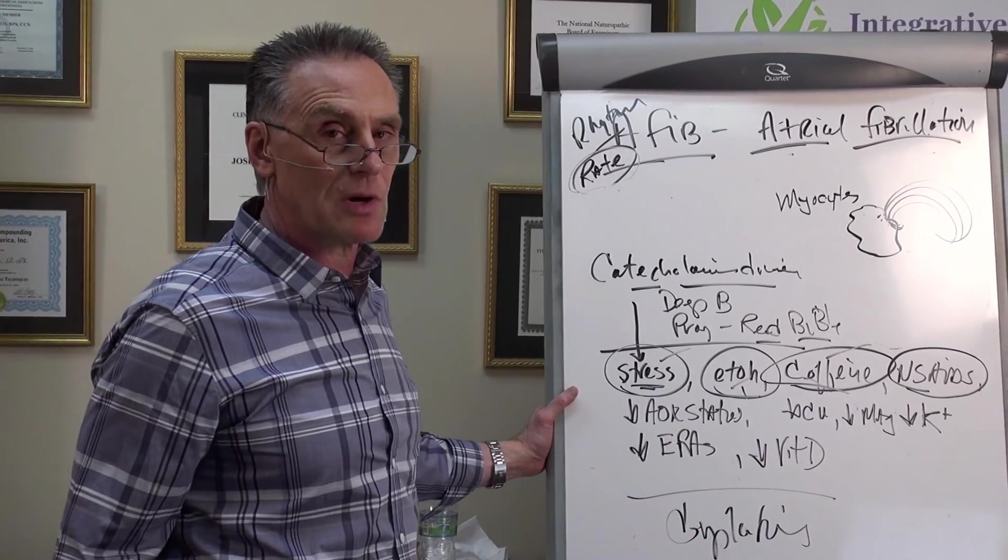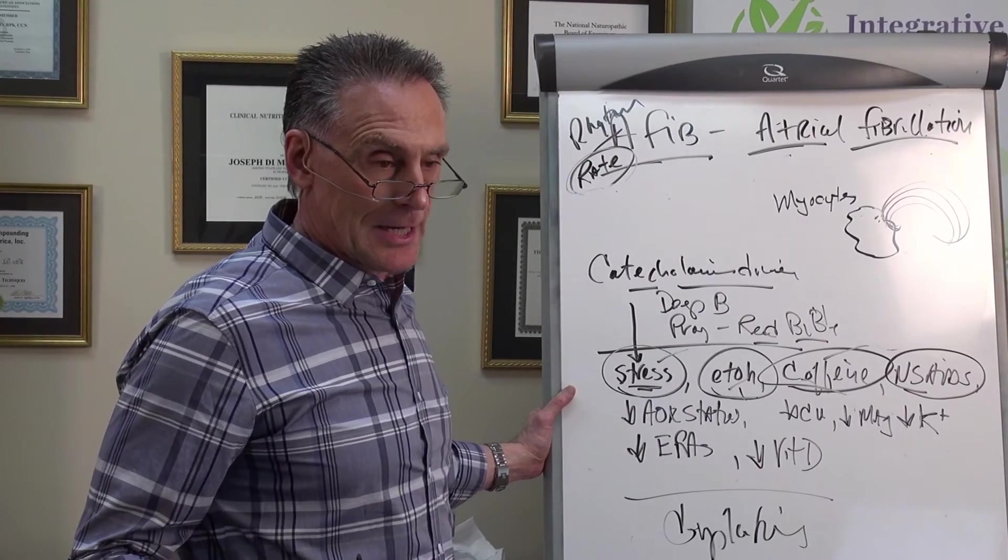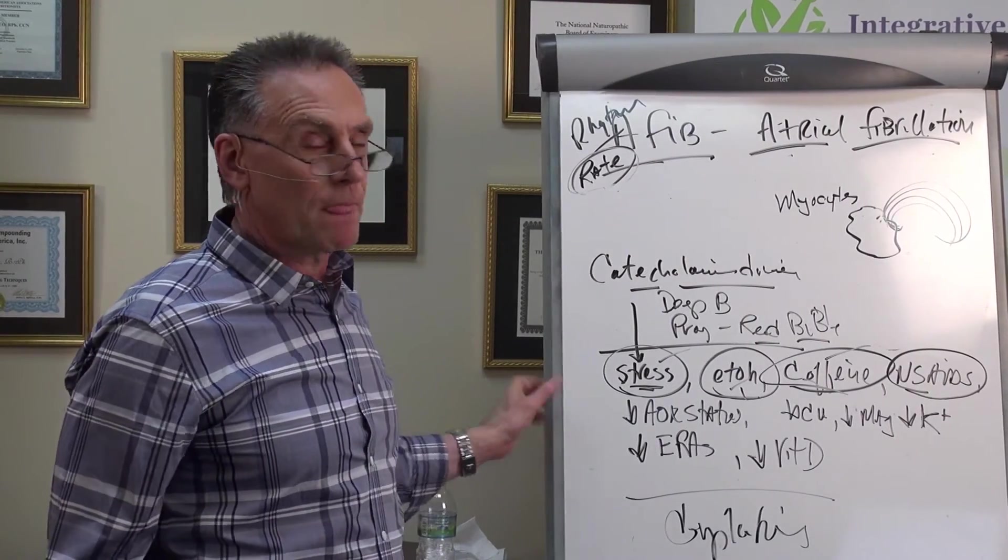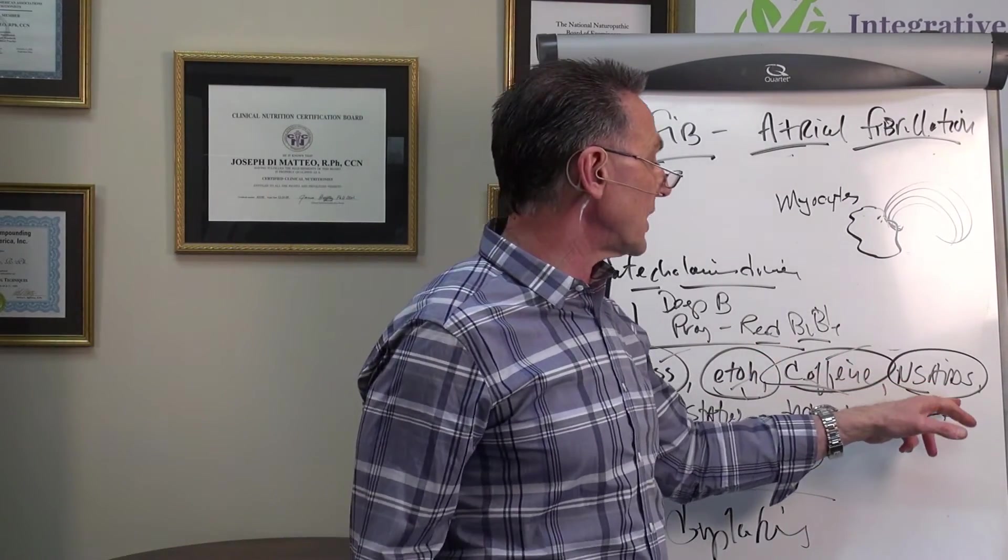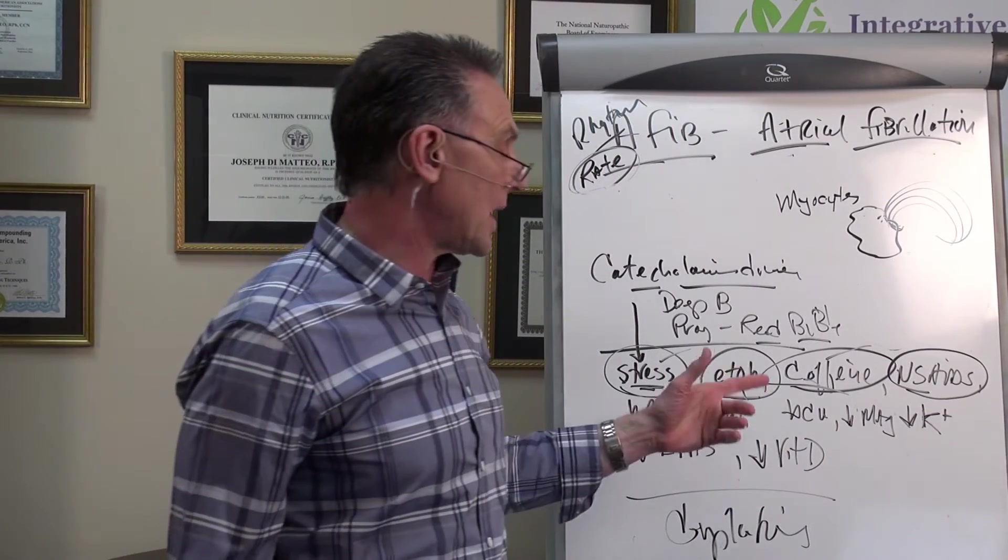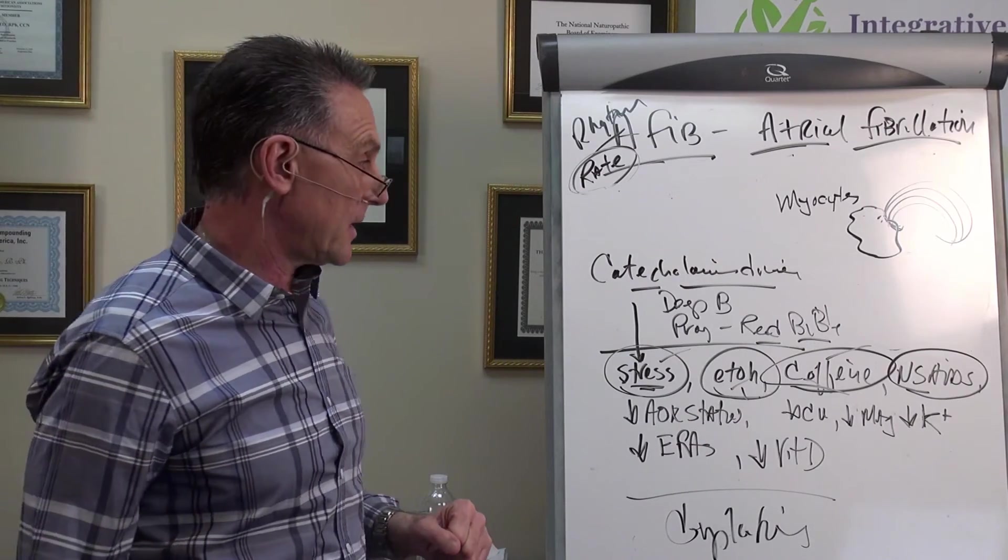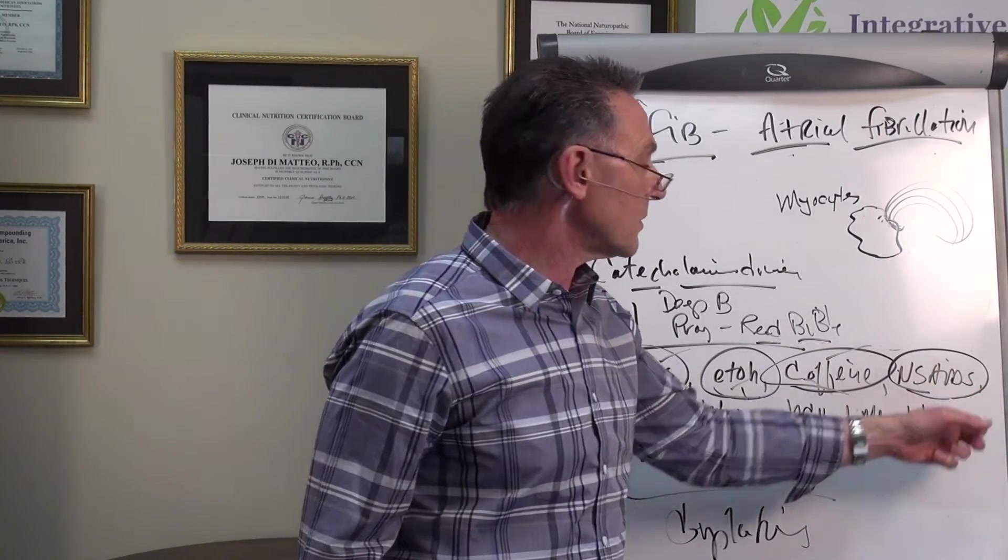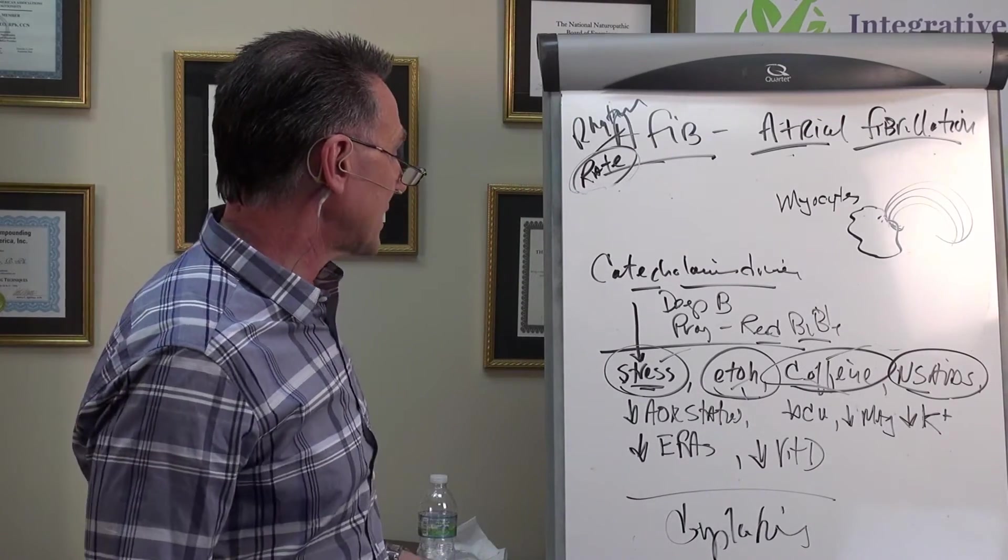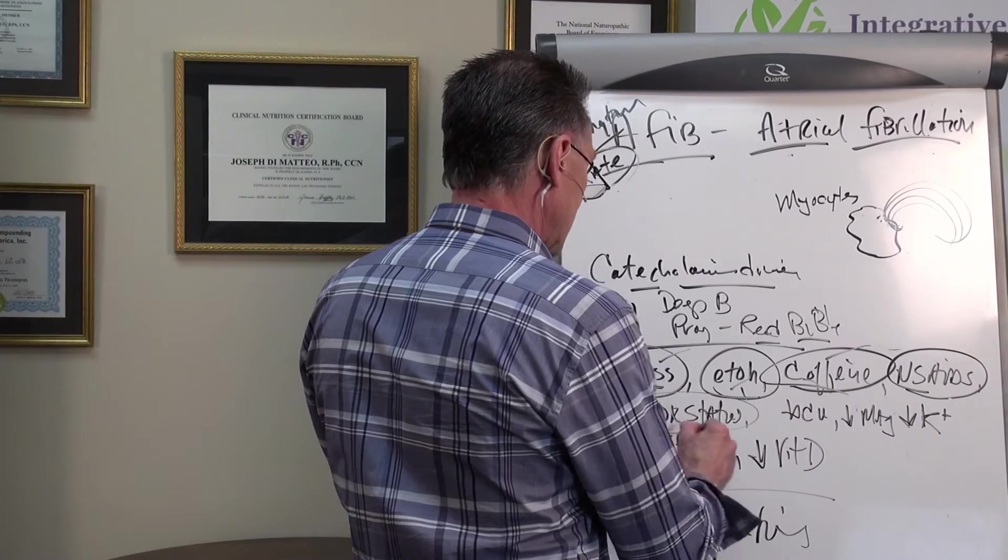Literature also shows that folks that chronically use non-steroidal anti-inflammatory drugs, ibuprofens, neproxens, and so on. And if you're addicted to those meds because of back problems, neck problems, you need to think twice. Because literature shows that folks that had recent use over the span of a couple of months have a much higher incidence of atrial fib, atrial fibrillation onset when they've used non-steroidal anti-inflammatory drugs.